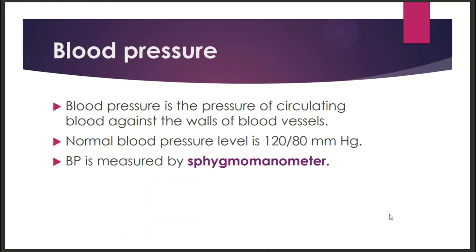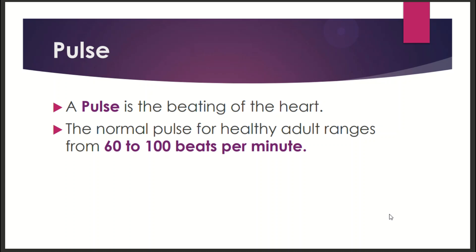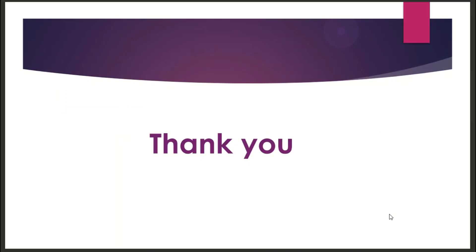Blood pressure is the pressure exerted on blood vessel walls. Normal blood pressure is 120 by 80 mmHg, measured using a sphygmomanometer. The normal pulse rate for adults is 60 to 100 beats per minute.